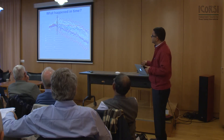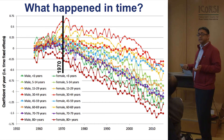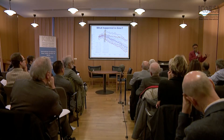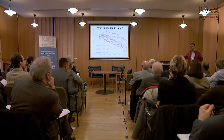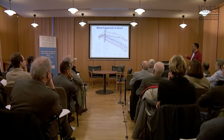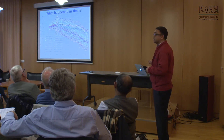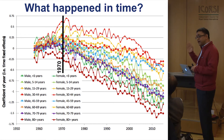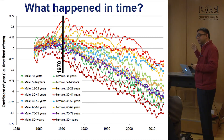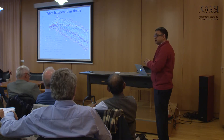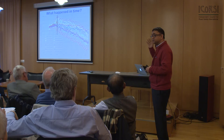Here are the time fixed effects, where each curve represents one age and sex group. The time fixed effect captures road safety performance after accounting for income effects. Before 1970, those time fixed effects are constant or noisy — the Kuznets hypothesis applied, nothing special was happening. But after 1970, something special happened: all curves show a consistently and strongly declining trend, becoming more and more effective over time.